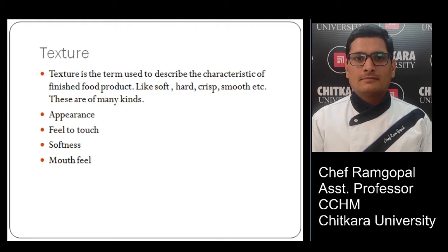Let's start the chapter. Texture is the term used to describe the characteristics of a finished food product, like soft, hard, crisp, smooth, etc. There are basically four types of texture: appearance, feel to touch, softness, and mouthfeel.